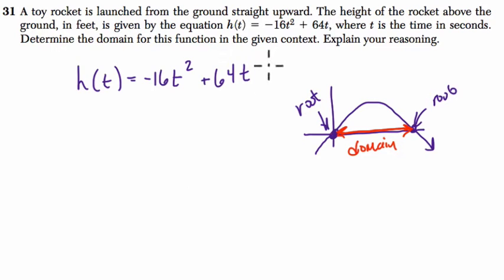One is to use algebra and factor, and the other is to probably graph it on the graphing calculator. So I'm going to first solve it algebraically. Remember, a root is when the height of the rocket is zero. So this is our height, our output, zero. And that equals -16t² + 64t.